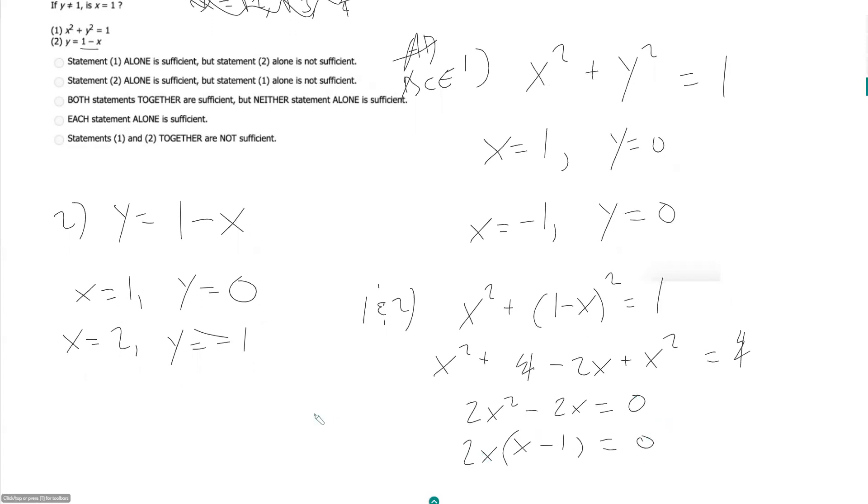So what does this mean for x? x can either be equal to 1 or x can be equal to 0. Now before we say insufficient because it could be equal to 1 or not be equal to 1, we have to check because we have to make sure that for each of these values y is still not equal to 1, because if it is, it's an erroneous solution.